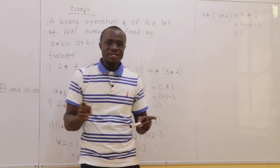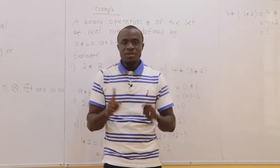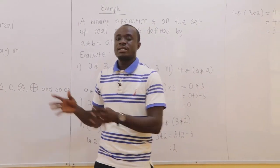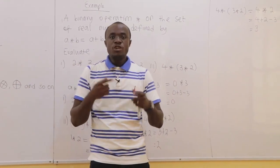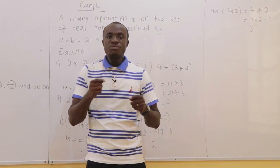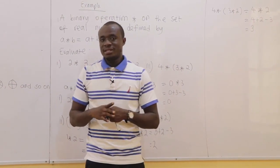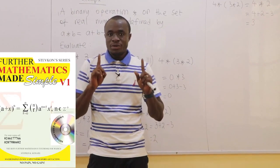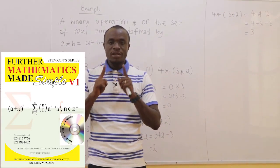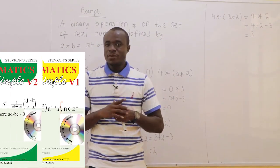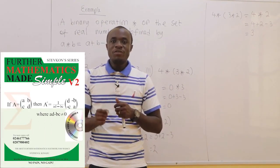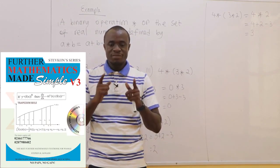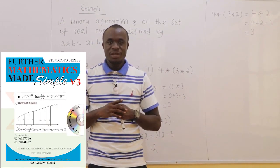Binary operation is a rule which combines two elements, say x and y, members of a particular set S, to produce a new element which may or may not be in the set S. We've considered an example. Make sure you get a copy of the books on the screen — it will give you a very firm foundation in mathematics. No pain, no gain.